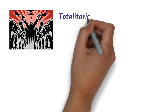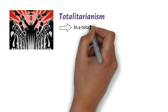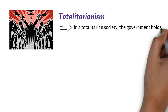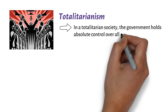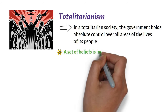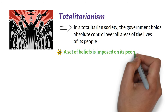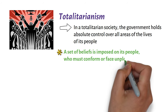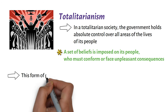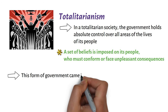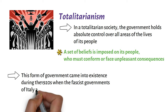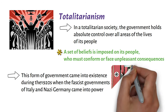On Totalitarianism. In a totalitarian society, the government holds absolute control over all areas of the lives of its people. A set of beliefs is imposed on its people, who must conform or face unpleasant consequences. This form of government came into existence during the 1920s, when the fascist governments of Italy and Nazi Germany came into power.